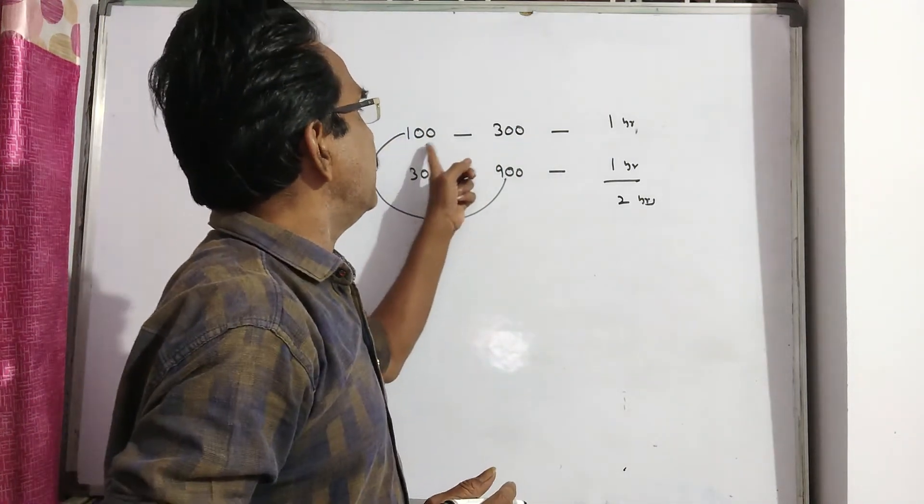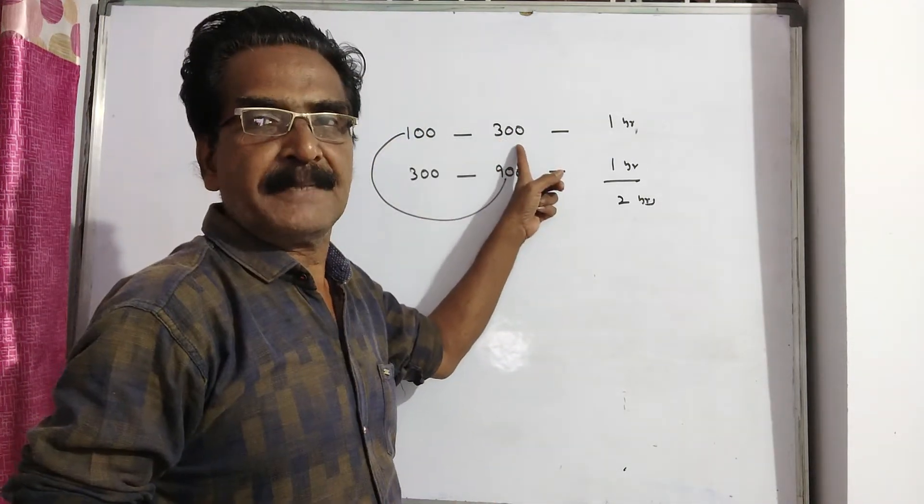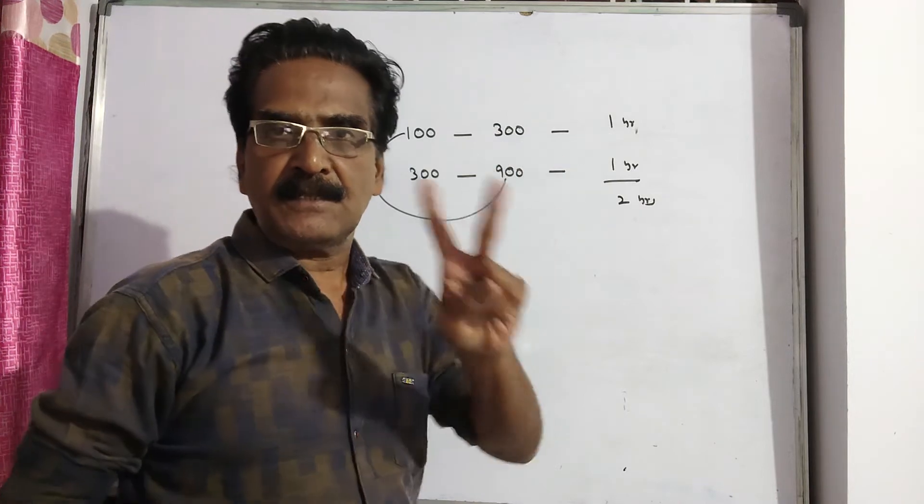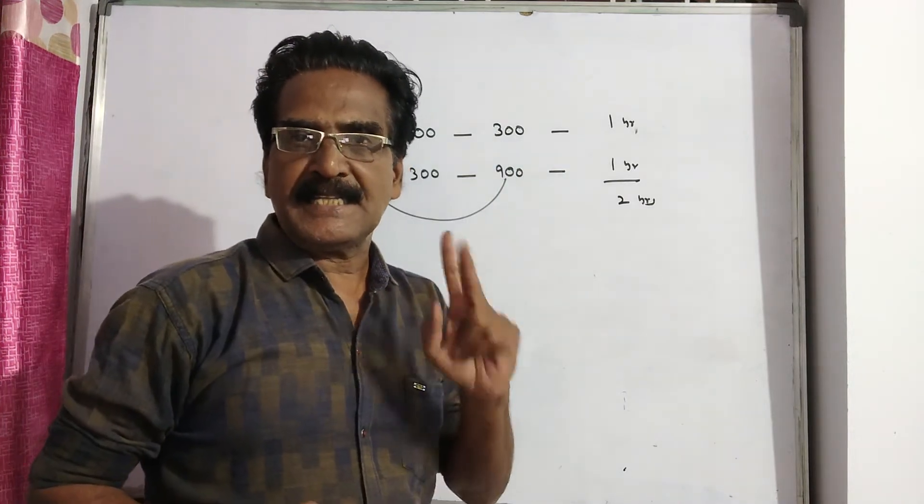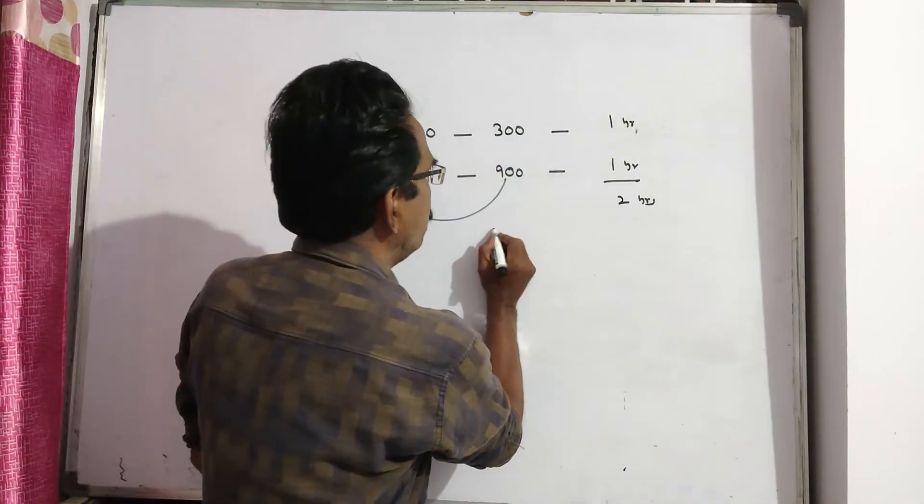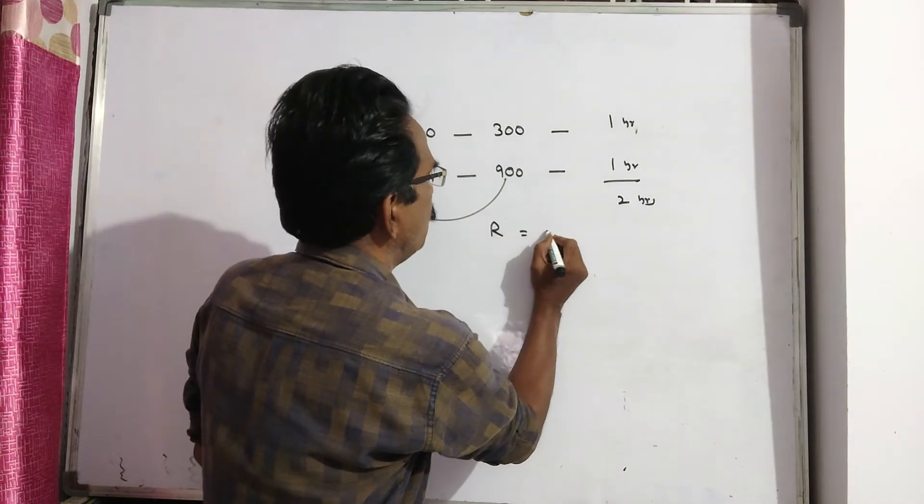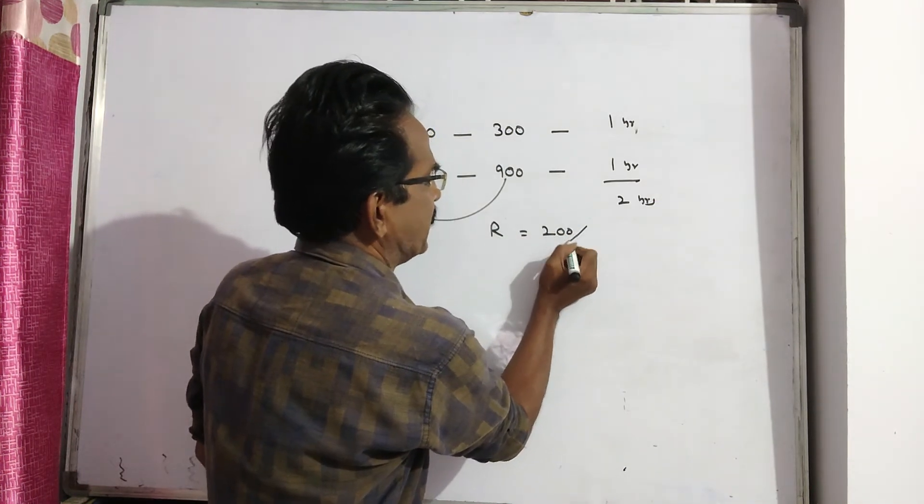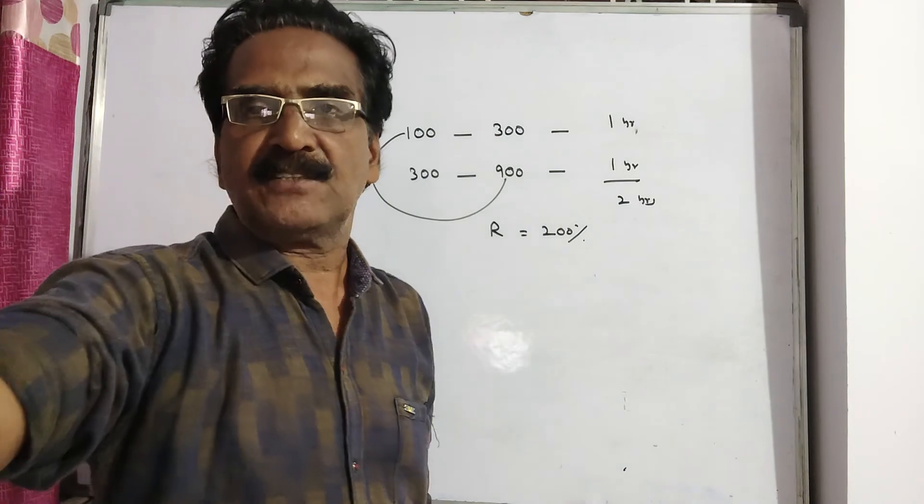See, 100 becomes 300 means the increase is 200 percent. So rate of interest R is equal to 200 percent. Okay friends, thank you.